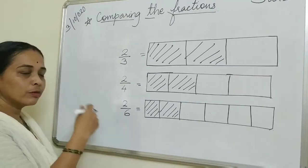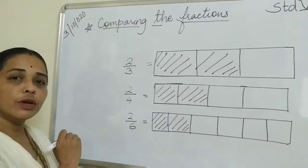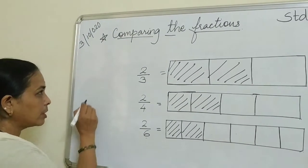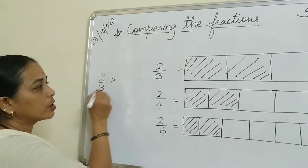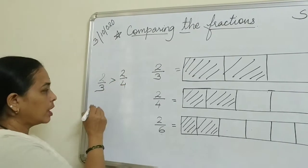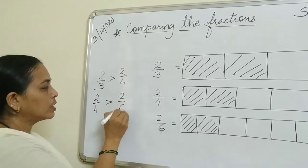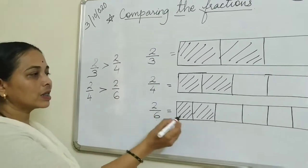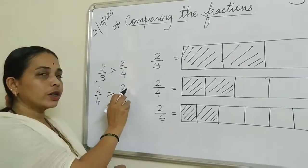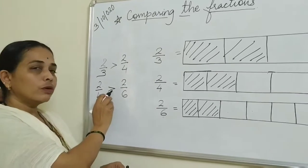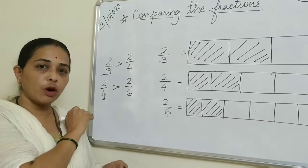Which fraction is smaller? The fraction having a larger denominator is smaller. So: 2 upon 3 is bigger than 2 upon 4, and 2 upon 4 is bigger than 2 upon 6. Even though the numerator is same, the denominator is different. Who is bigger? The fraction where the denominator is smaller.